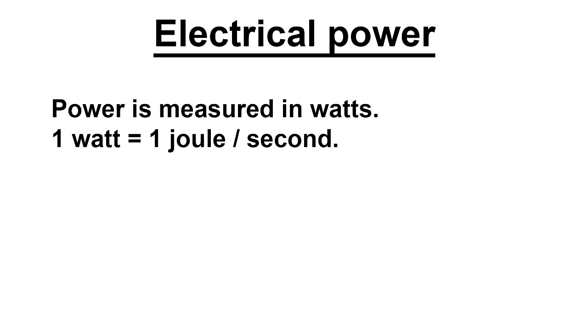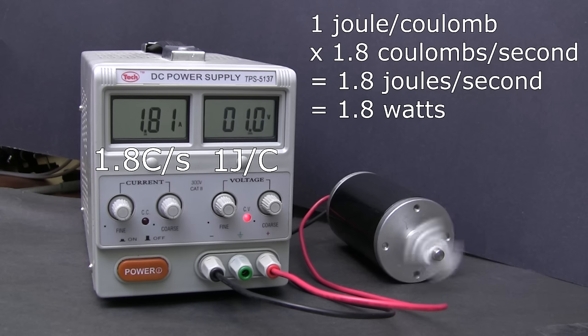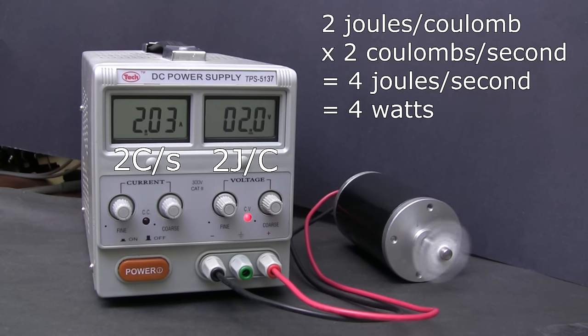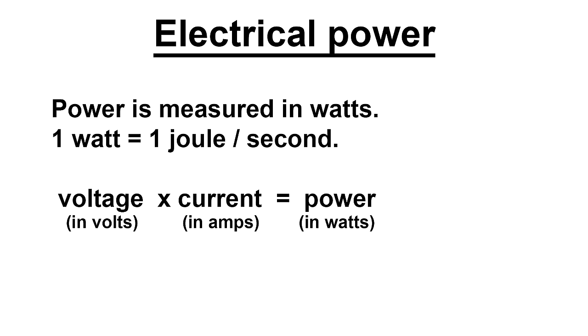One watt is equal to one joule being transferred per second. So for our example with the motor, 1.8 joules per second means that 1.8 watts of power are being delivered to the motor. If we increase the voltage to 2 volts, more current flows and more energy gets transferred for each unit of charge. Now we are getting 4 joules per second, or 4 watts of power being supplied to the motor. Since more work is being done per second, the motor spins faster.